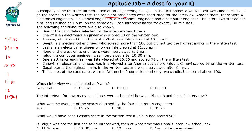Some facts are given about the candidates' marks — values like 88, 83, and 78 are mentioned. The last condition states that scores were in arithmetic progression and only 2 candidates scored above 100. Observing the numbers, the common difference is 5, and the scores end in 3 or 8.